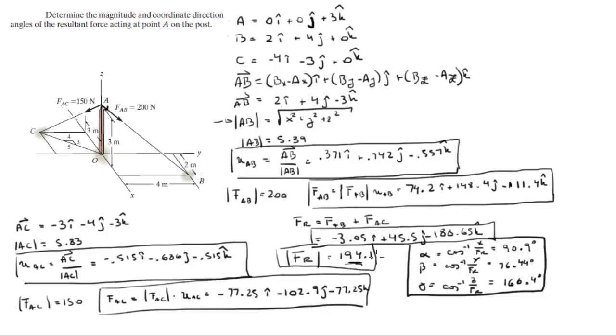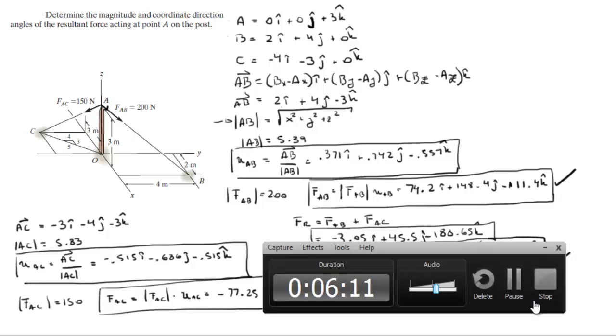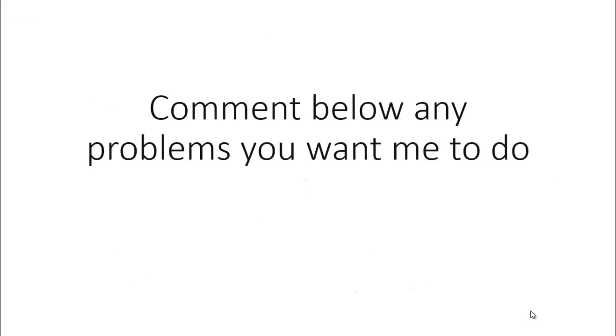So magnitude of the resultant force, direction angles. First Cartesian vector of AB. Second is the Cartesian vector for FAC. Final answers. Please comment below if you want me to do any problems and I'll be happy to help. Thank you.